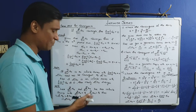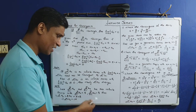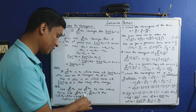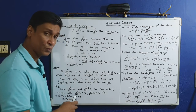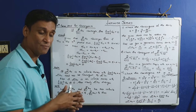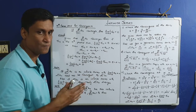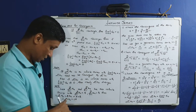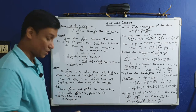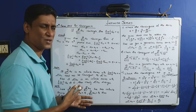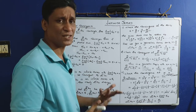An additional result: let sigma a_k and sigma b_n be two infinite series with sigma a_k = A and sigma b_n = B. Then sigma a_k + sigma b_k = A + B. Also, sigma c·a_k = c·A for any constant c. We will not prove this — it is just an observation.